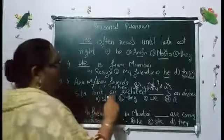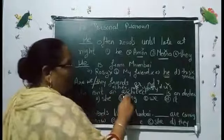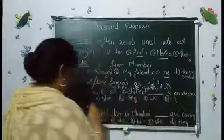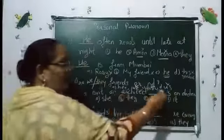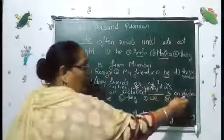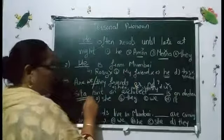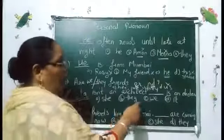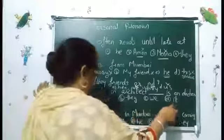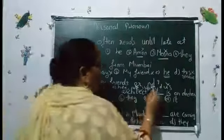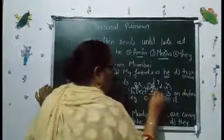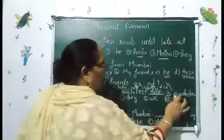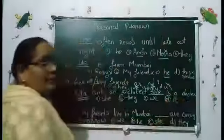Sita is not an architect. Blank is a doctor. Sita is a girl, so we ask: will we use 'they'? No. 'We'? No. 'It'? No. For a girl, we use 'she.' She is a doctor.